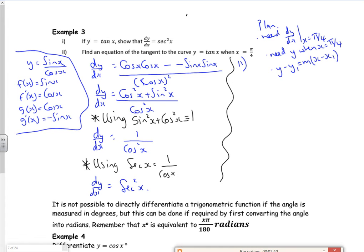We'll do the gradient first. So dy by dx is secant squared of pi by four. You can't do that in your calculator, so I've got to see it as one over cos squared of pi by four.